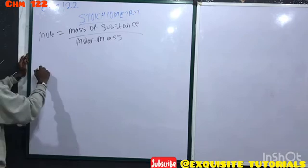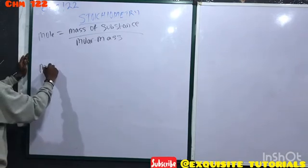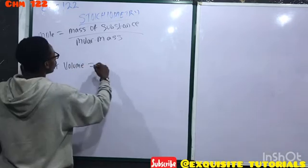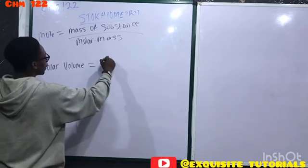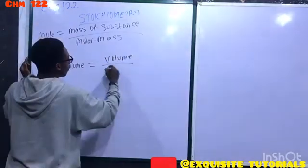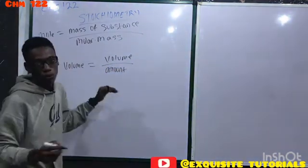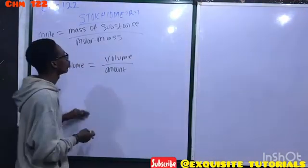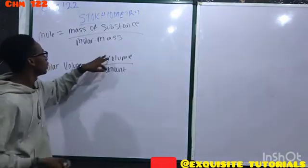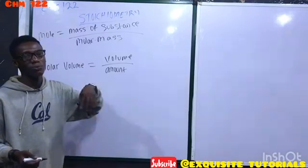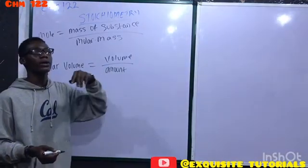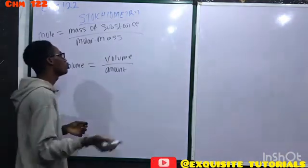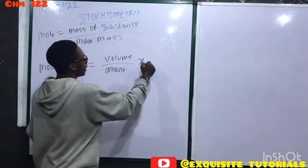Molar volume equals volume over amount. Amount could be in moles—amount is the same as quantity, in moles or grams, but in stoichiometry they'll give it in moles. Volume could be in cm³ or dm³. They'll likely give it in cm³, so you multiply by 1000 to convert to dm³.